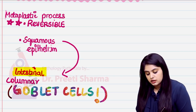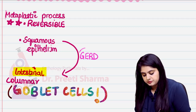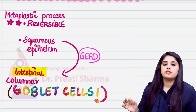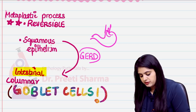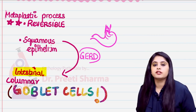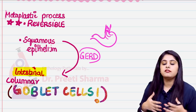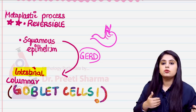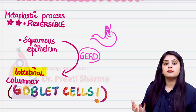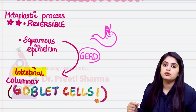Why does this change occur? It happens because of GERD — gastroesophageal reflux disease. When a lot of acid flows back from the stomach into the esophagus, the esophagus protects itself by converting its squamous epithelium into an intestinal type of epithelium to withstand the constant acid damage.